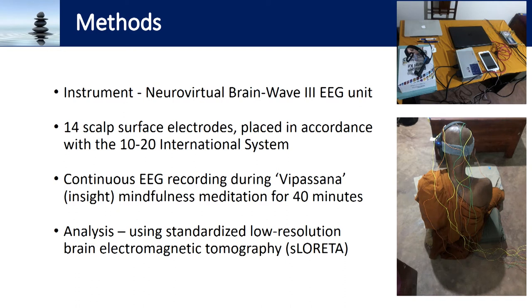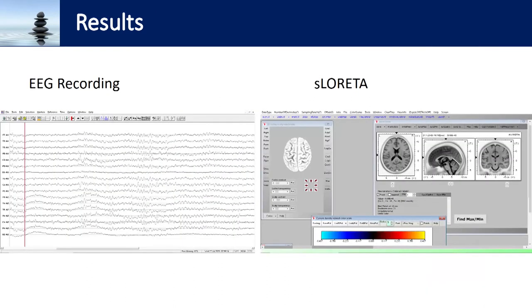Analysis was done using standardized low-resolution brain electromagnetic tomography, called S-Loreta, which is widely used to analyze EEG data for medical research purposes. On the left-hand side, you can see a screenshot of an EEG recording that we have done. Those EEG recordings were fed into S-Loreta, and S-Loreta analyzes the current densities as well as creating 3D brain maps.